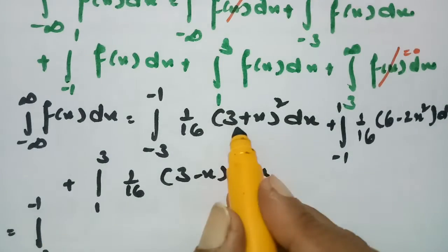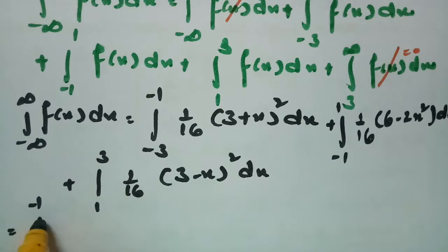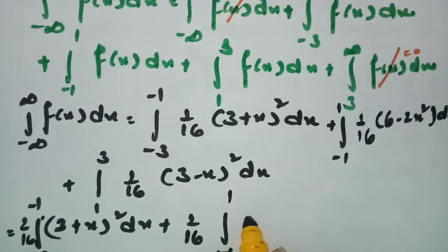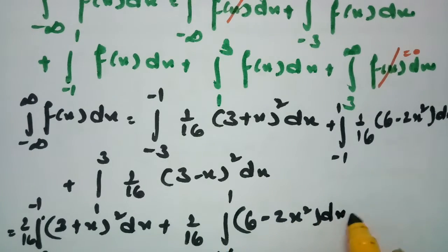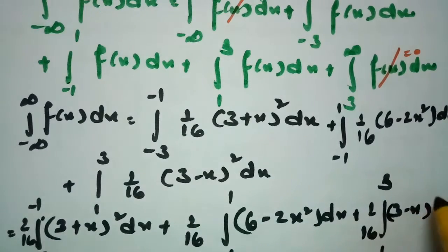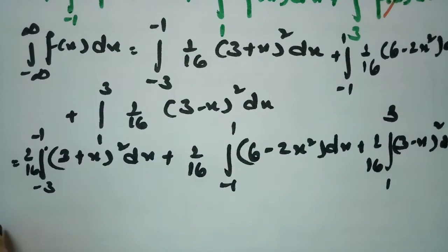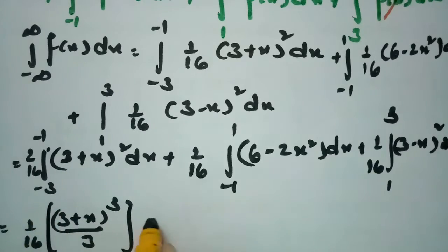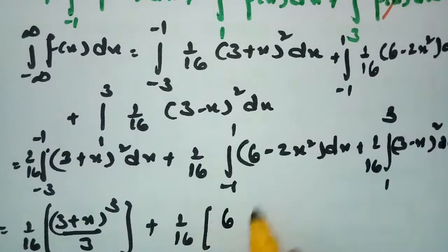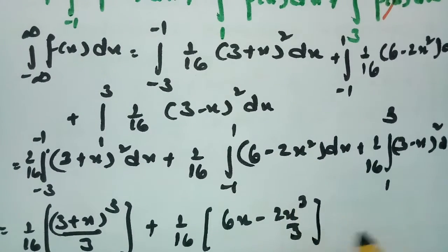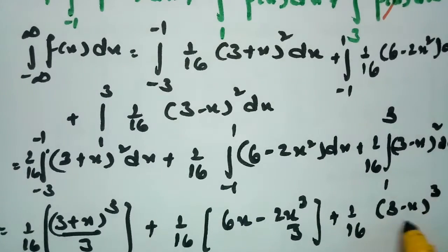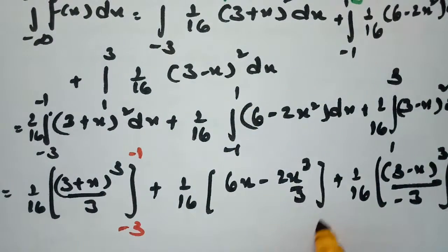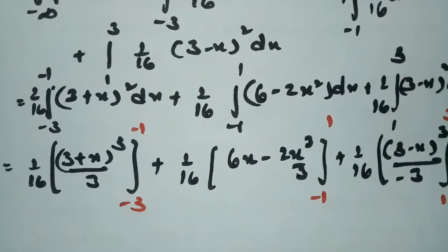Bringing (1/16) outside each integral and integrating: for (3 + x)², the integral is (3 + x)³/3; for (6 - 2x²), the integral is 6x - 2x³/3; and for (3 - x)², the integral is (3 - x)³/3 with a negative sign. The limits are -3 to -1, -1 to 1, and 1 to 3 respectively.